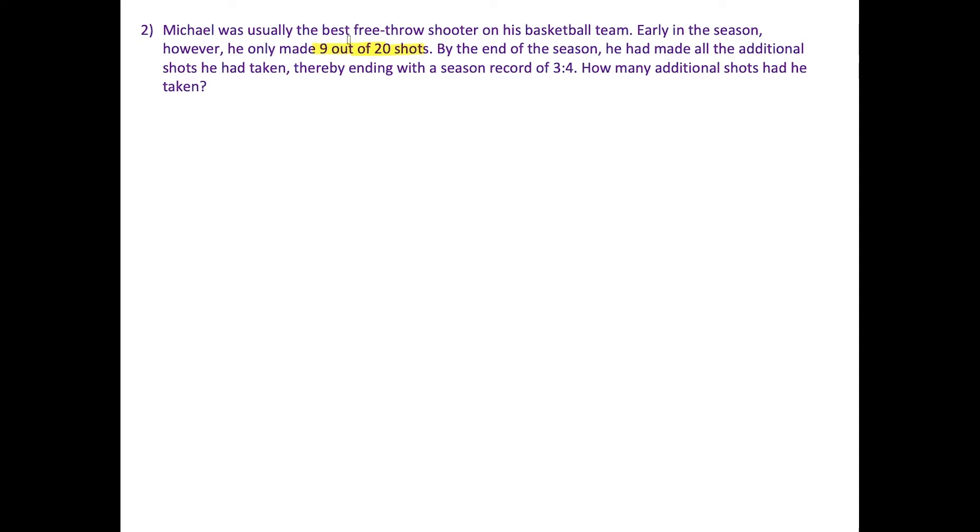So this is our first ratio we're going to use. But by the end of the season, he made all the additional shots that he had taken. And he ended the season with a record of 3 to 4. So this is giving us basically like his shooting percentage, like how many shots did he make out of the ones that he took. But the main question here is how many additional shots had he taken. So basically, after his 20th shot, how many more shots did he have to take, getting them all in the hoop to end up with the ratio of 3 to 4?